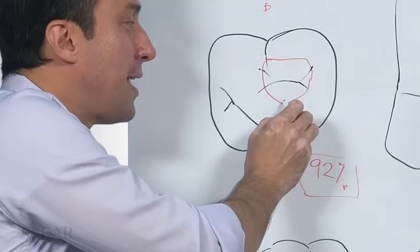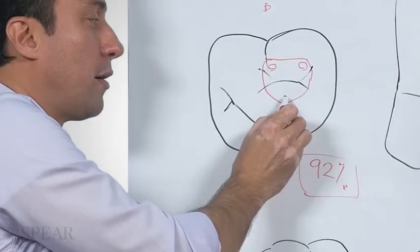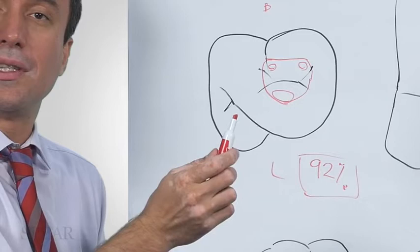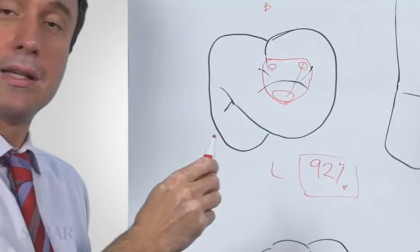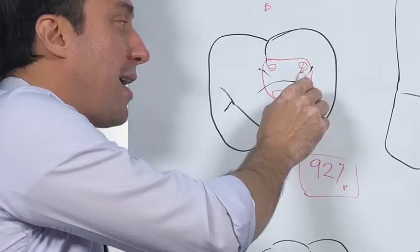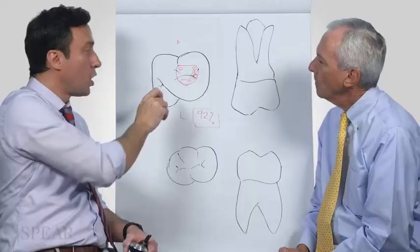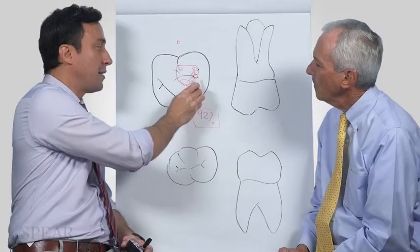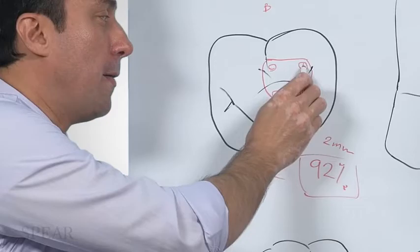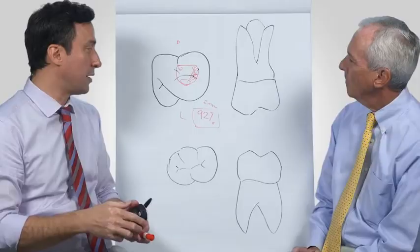You basically have your MB1 here, your distal buccal here, your palatal a little bit bigger here. While we were told previously that the MB2 is on a line from MB1 to the palatal canal, it's actually not true. This area is covered by a dentinal shelf. When you remove this area, you'll find that the MB2 is a little bit more mesial than this line. Based on the study, the orifice was about two millimeters mesial lingual from the MB1.